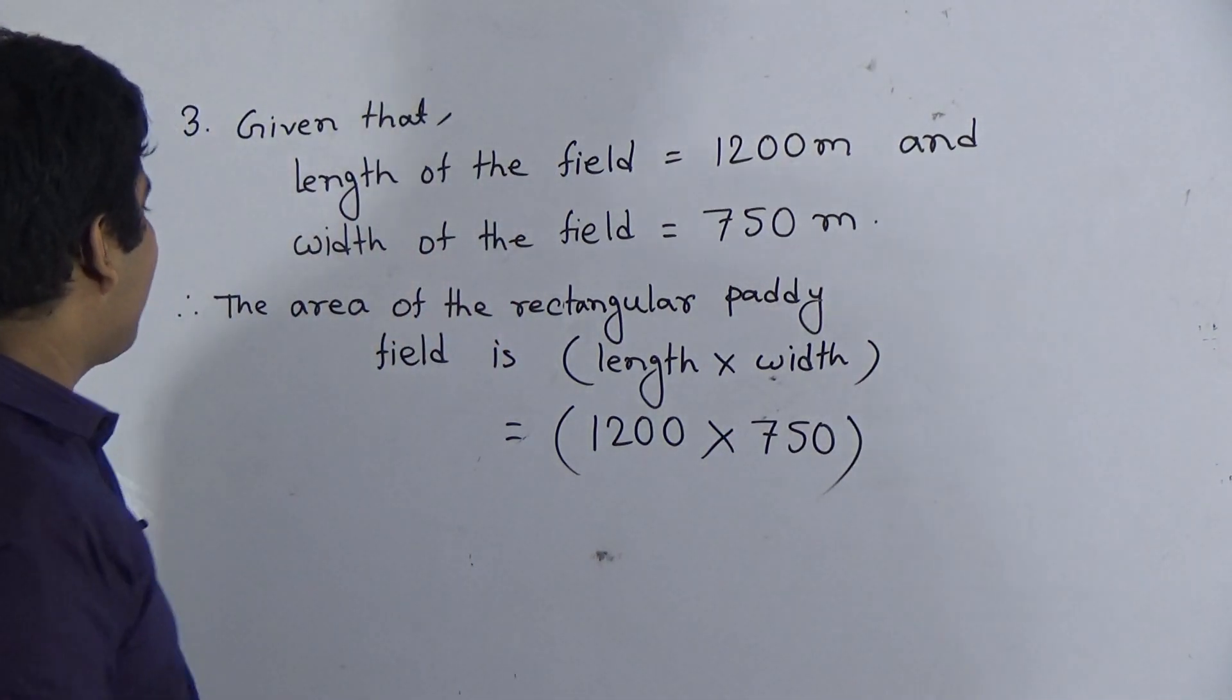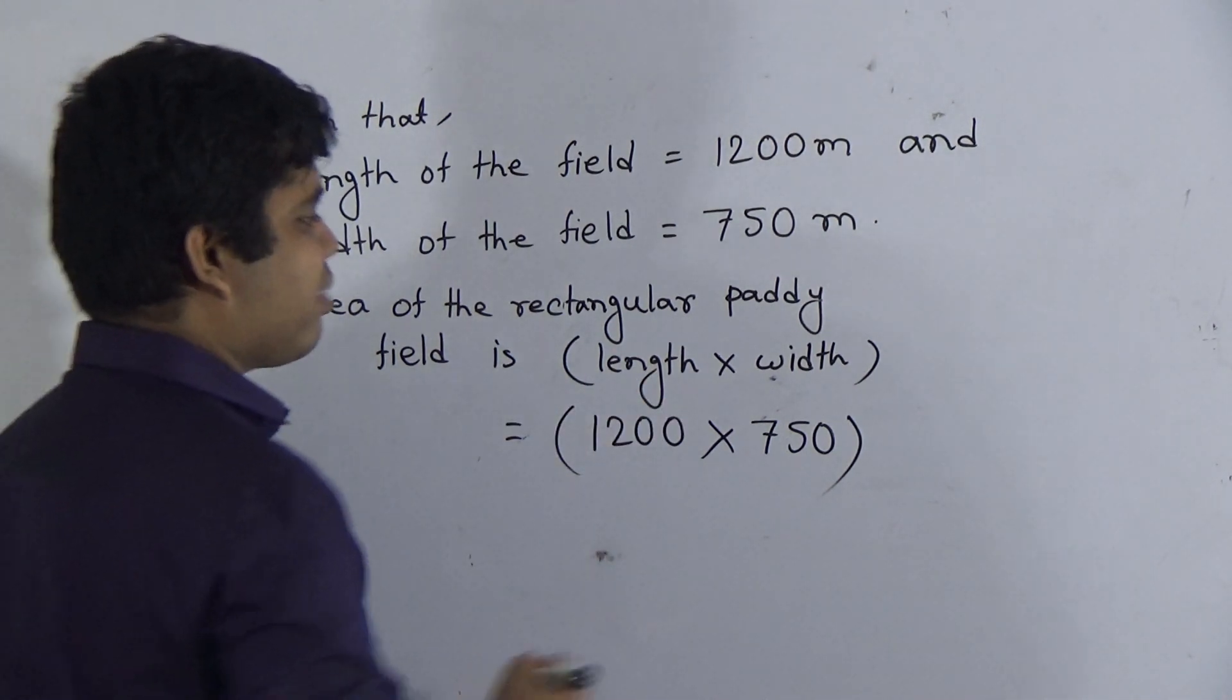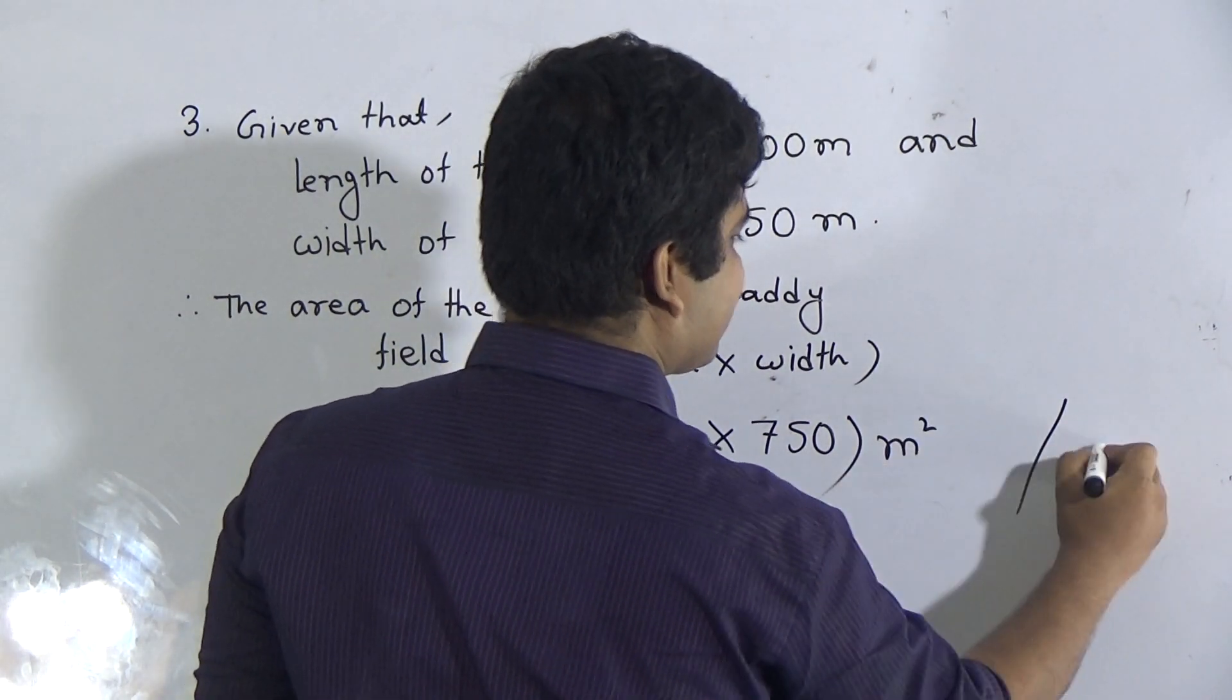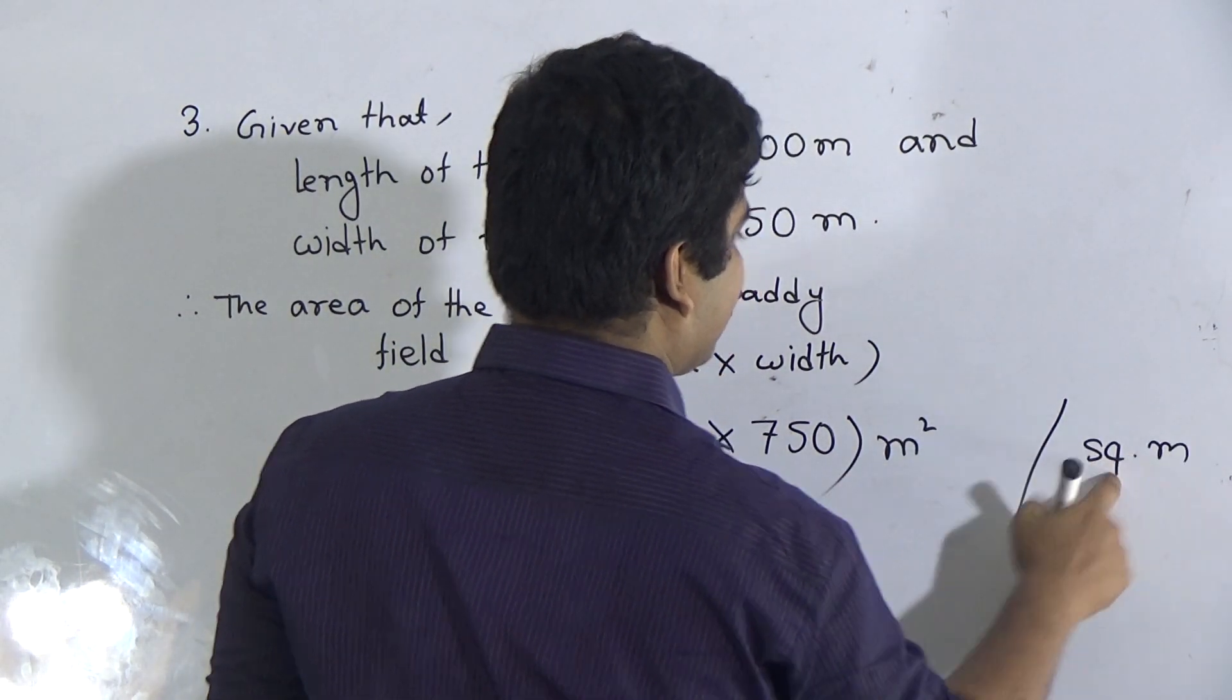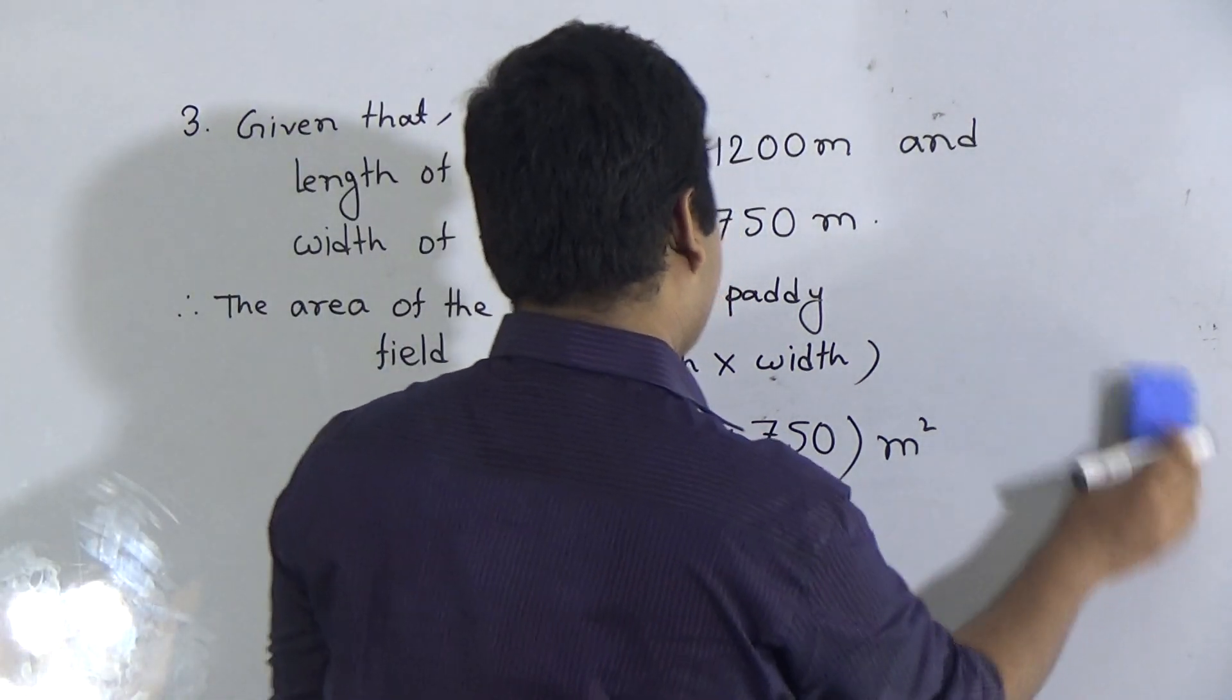Now, we put the value of length and width, which is given at first. So, length is 1200 and width is 750. As we need to find out the area, so the unit will be square meter. Meter square or you can write this as sq. m. This means square meter.